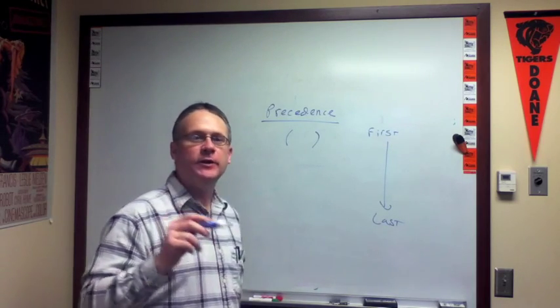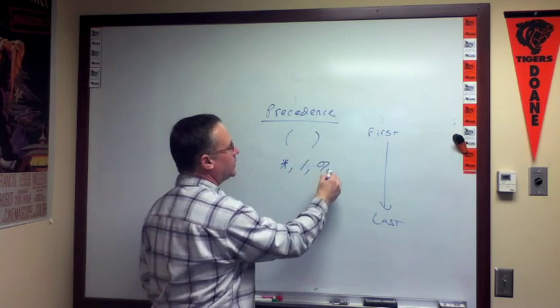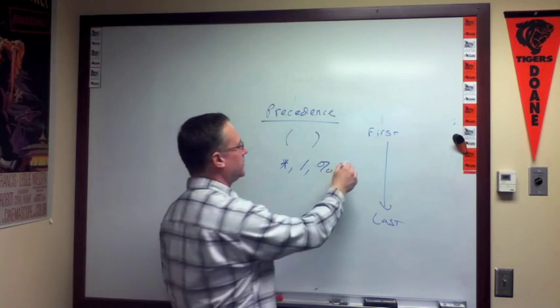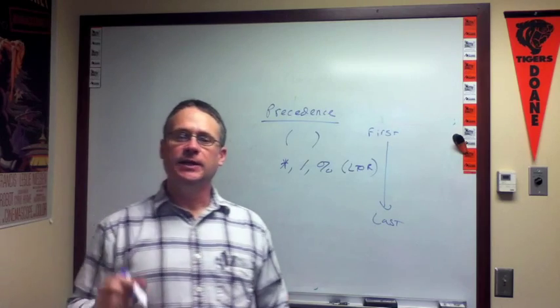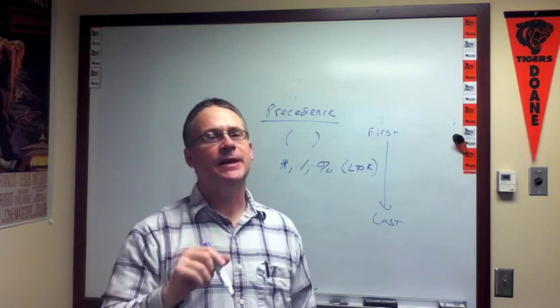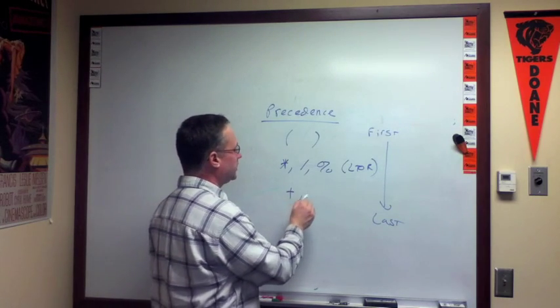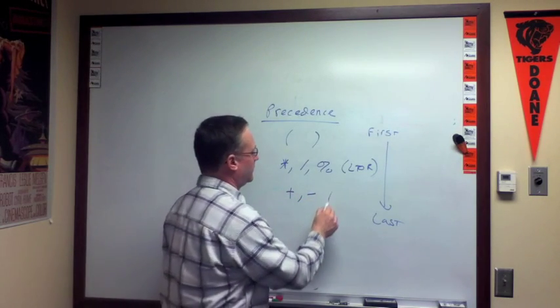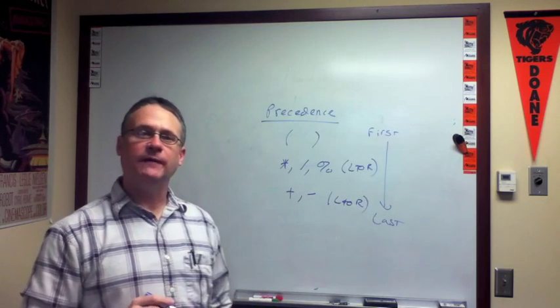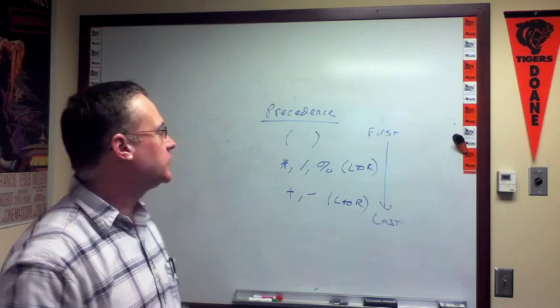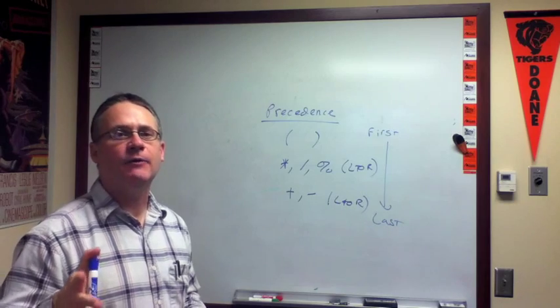Then, I'm going to do multiplication, division, and modulo operators, left to right, if there's more than one of them at the same precedence level. And finally, we'll do addition and subtraction, also left to right. So that's the order of operations, and we can do a few examples here to illustrate how that would work. We'll start with a couple of the ones that we just did to show you what the computer actually does.